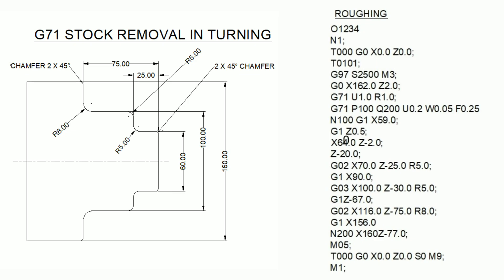G97 is constant surface speed cancel, meaning the RPM stays the same regardless of diameter — whether cutting at 60mm or 160mm diameter, the RPM will be the same. This is G97. M3 means spindle clockwise. Next, G0 X162 Z2.0 — this is the starting position of the program. Since the component is 160mm diameter, we leave a 2mm gap at the starting point.